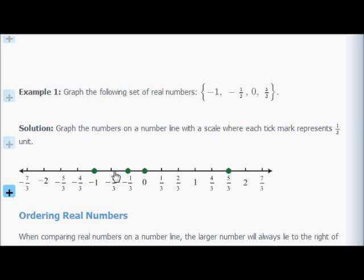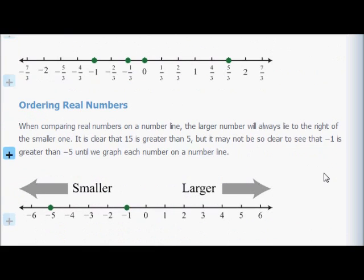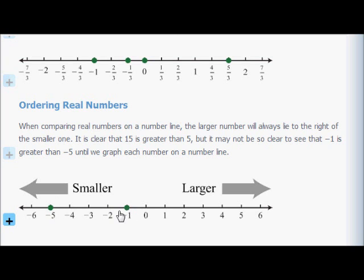We've got negative one here, then negative two-thirds with nothing there, then negative one-third with a mark, then zero with a mark, then one-third, two-thirds, one, four-thirds, five-thirds with a mark. When you're ordering real numbers, the larger number is always on the right of the smaller one. More negative numbers are considered smaller — negative five is smaller than negative one, so it goes on the left of the bigger number.